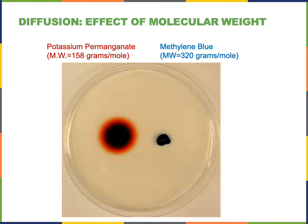The molecular weight of the chemical that is diffusing will also influence the rate of diffusion. A larger molecule will diffuse more slowly compared to a smaller molecule. For example, in an experiment where a crystal of potassium permanganate and a crystal of methylene blue were both placed into a petri dish containing an agarose gel, both chemicals diffuse through the gel over time. The larger molecule, methylene blue, diffuses more slowly compared to potassium permanganate.